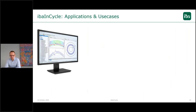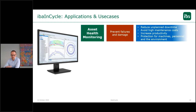So with the new IBA-N cycle tool, it can be used for multiple applications or use cases. We mainly separated these into three categories. On one hand you can use it for asset health monitoring — so you want to prevent damages and failures like with the saw — so you can reduce unplanned downtimes, reduce your maintenance cost, increase your productivity, and protect your machines or your plant.